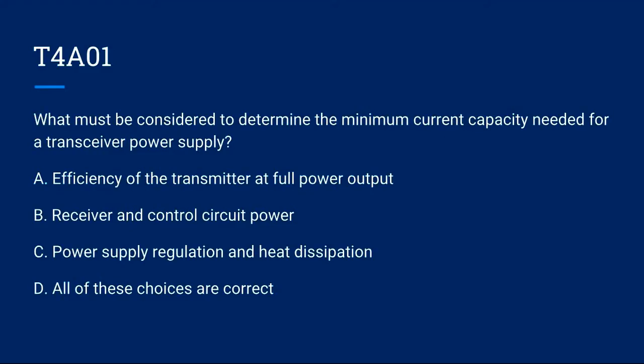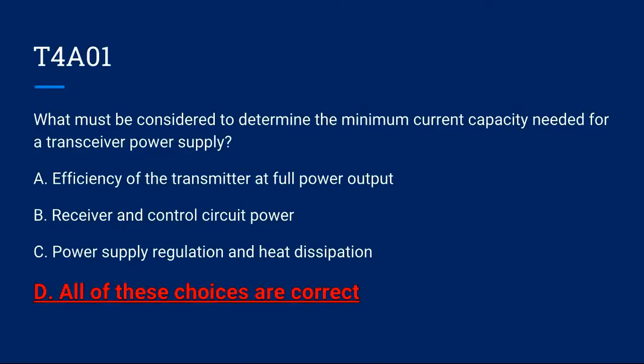T4A-01: What must be considered to determine the minimum current capacity needed for a transceiver power supply? A. Efficiency of the transmitter at full power output. B. Receiver and control circuit power. C. Power supply regulation and heat dissipation. Or D. All of these choices are correct. Correct answer is D. All of these choices are correct.